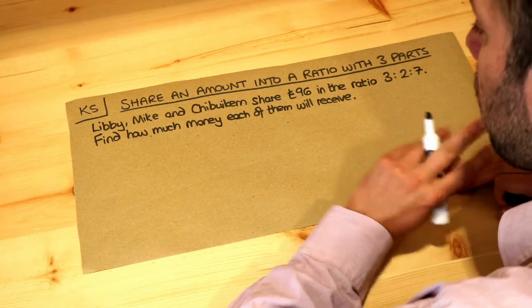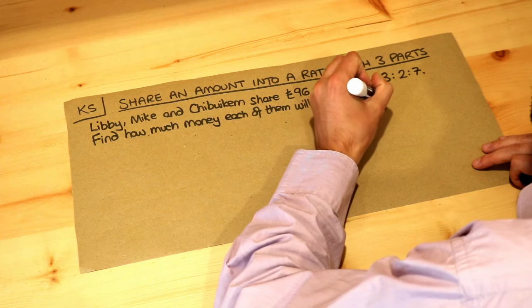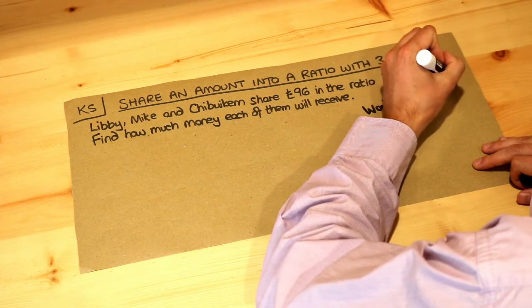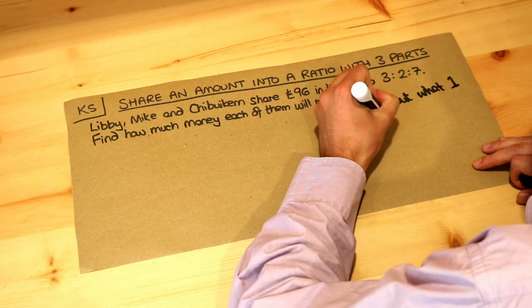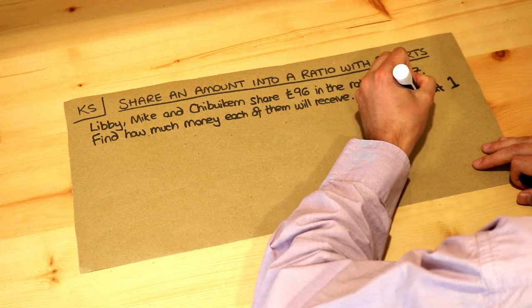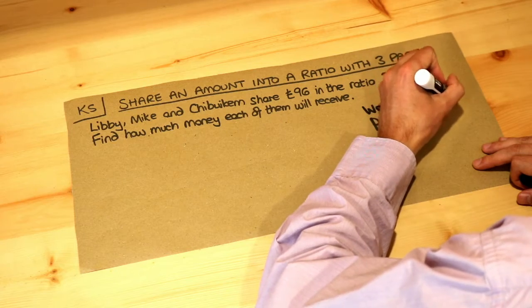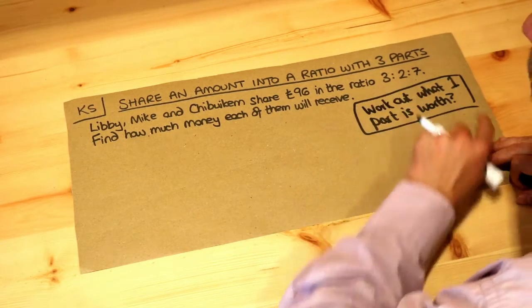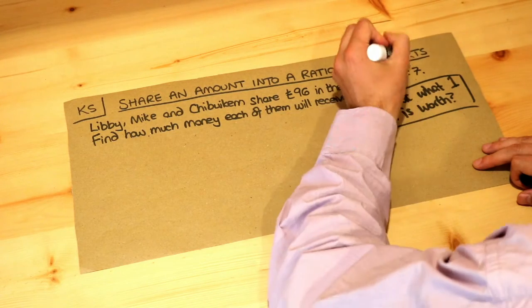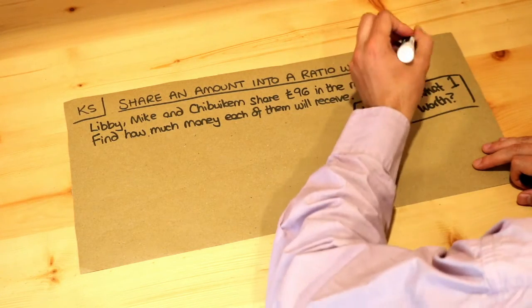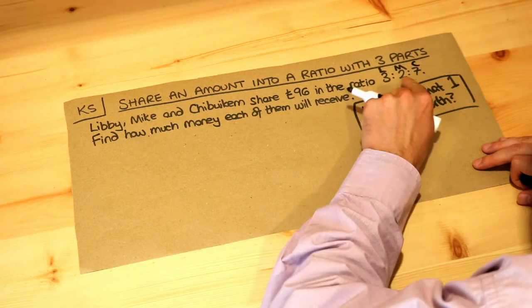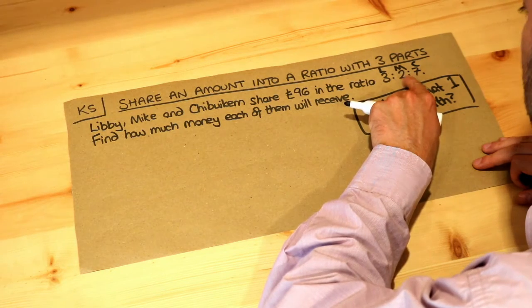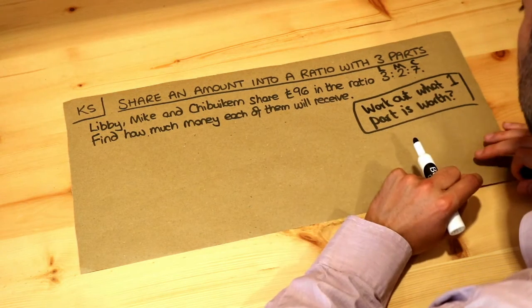A strategy that works with most ratio questions is to work out what one part is worth, and I use that strategy in many of these videos. In the ratio it tells us the different parts, so for each three parts Libby gets, Mike gets two parts and Chibokam gets seven parts.